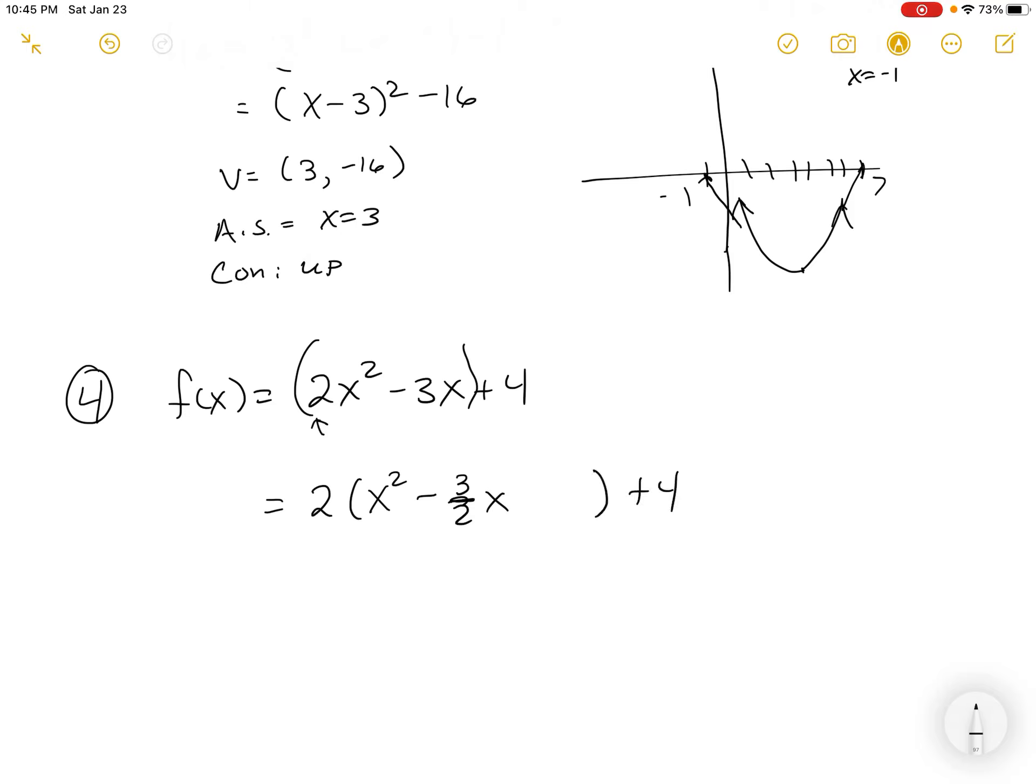Then you're going to say, well, how do I get that other number? The same way I always have. You take half of the middle coefficient and square it. Oh, so I've got 3/4 and I'm going to square it. That's 9/16. Awesome.